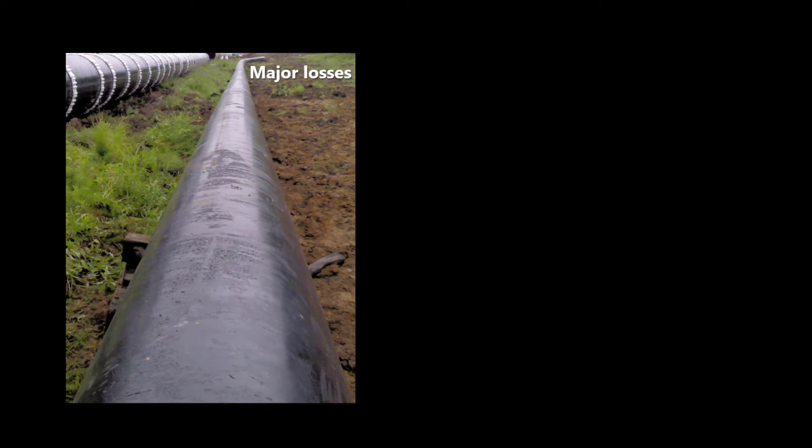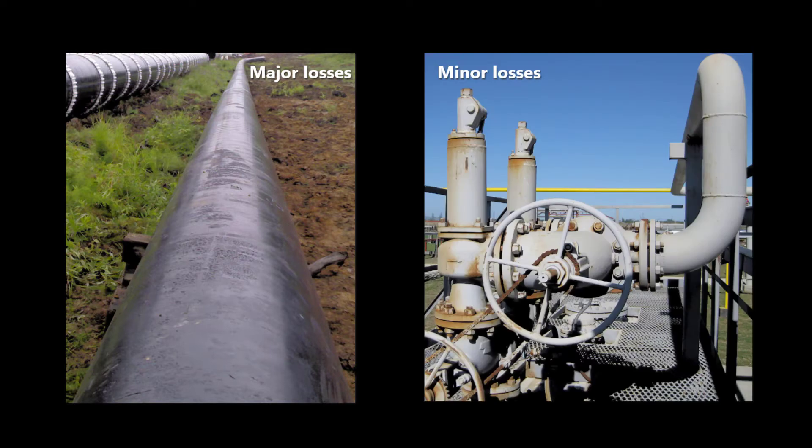HL losses can be divided into two main categories: the major losses that are connected to the friction in straight pipes, and minor losses due to different components in the piping system, such as valves, bends, junctions, and so on. In this lesson, we will analyze the major losses in pipes and ducts.